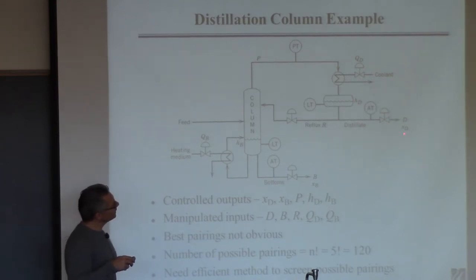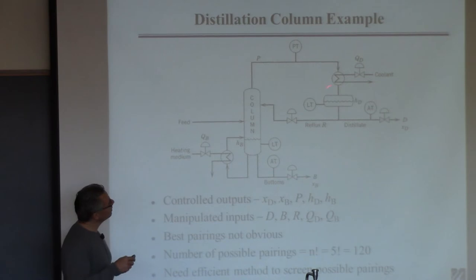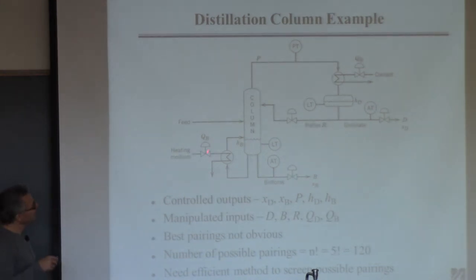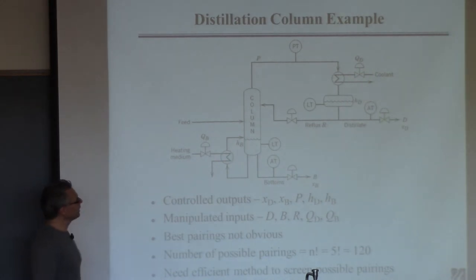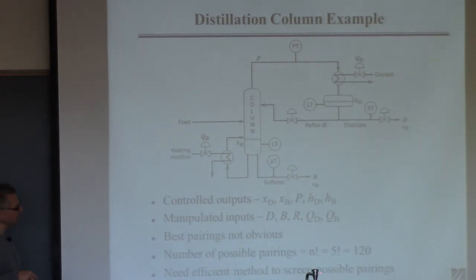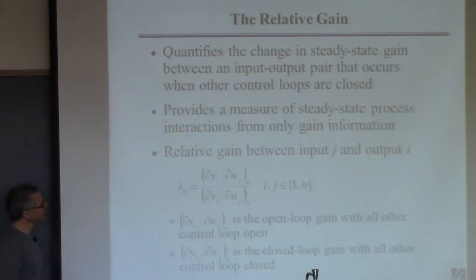One approach is to enumerate all 120 possibilities, but that's not efficient. Some pairings don't make physical sense — for instance, using the bottoms flow to control the overhead composition would require the effect to propagate up the entire column. So for distillate composition control, you'd use a manipulated variable in the overhead circuit. Even narrowing it down, you still have around 12 sensible possibilities — you need a systematic screening tool.